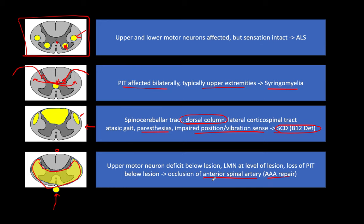Upper motor neuron lesions produce hyperreflexia, increased tone, and spasticity. Lower motor neuron lesions produce the opposite: atrophy and fasciculations, because the lower motor neuron can't reach the muscle. Upper motor neuron signs appear below the lesion; lower motor neuron signs appear at the level of the lesion, because below the lesion the lower motor neurons are completely fine.